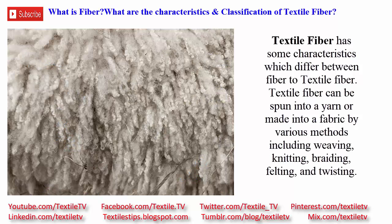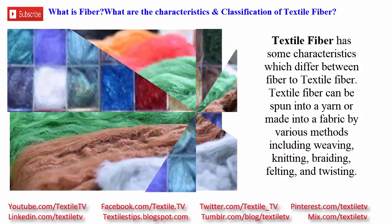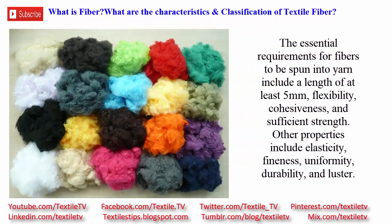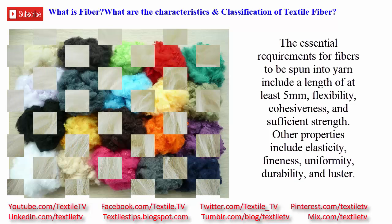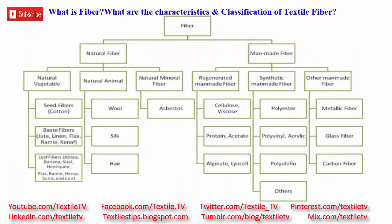Textile fiber can be spun into a yarn or made into a fabric by various methods including weaving, knitting, braiding, felting, and twisting. The essential requirements for fibers to be spun into yarn include a length of at least five millimeters, flexibility, cohesiveness, and sufficient strength. Other properties include elasticity, fineness, uniformity, durability, and luster.